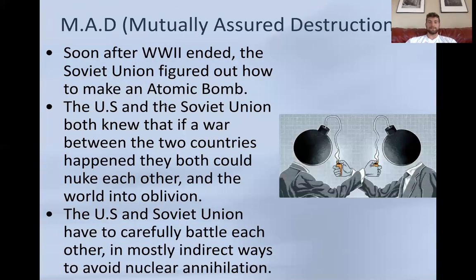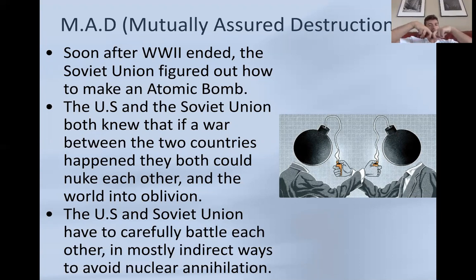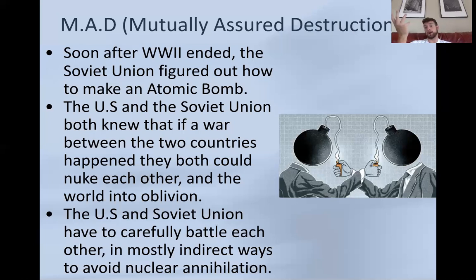One important concept is mutually assured destruction, also known as MAD. Soon after World War II ended, the Soviet Union figured out how to make an atomic bomb. Both the US and Soviet Union knew that if a real war broke out, they each had enough nuclear weapons to destroy each other — and pretty much the world. So they had to carefully tiptoe around each other. Mutually assured destruction: if I shoot a bomb at you, you shoot one back, and after a few exchanges, the entire world is gone. Scary stuff that can still happen today.